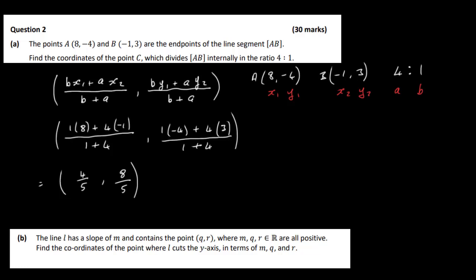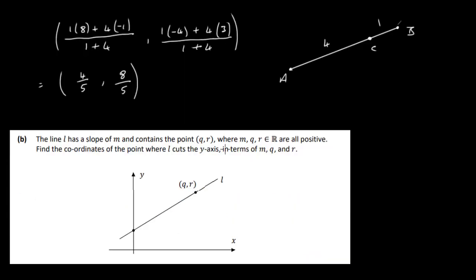So basically what we've got here is we have a line segment AB and we have this point here, 4/5, 8/5 somewhere along here and it divides the line in the ratio of 4 to 1. So this is our point C here that we've just found. Okay so let's look at Part B.